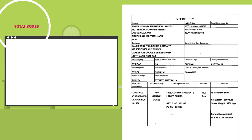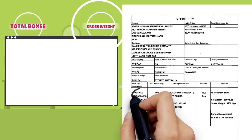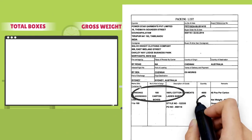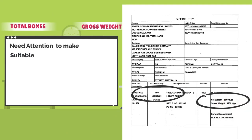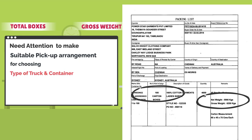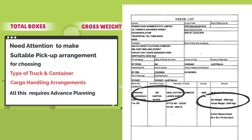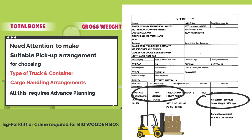Total boxes and gross weight: need attention to make suitable pickup arrangement for choosing type of truck and container. Cargo handling arrangements — all of this needs advanced planning. For example, a forklift or crane may be required for a big wooden box.